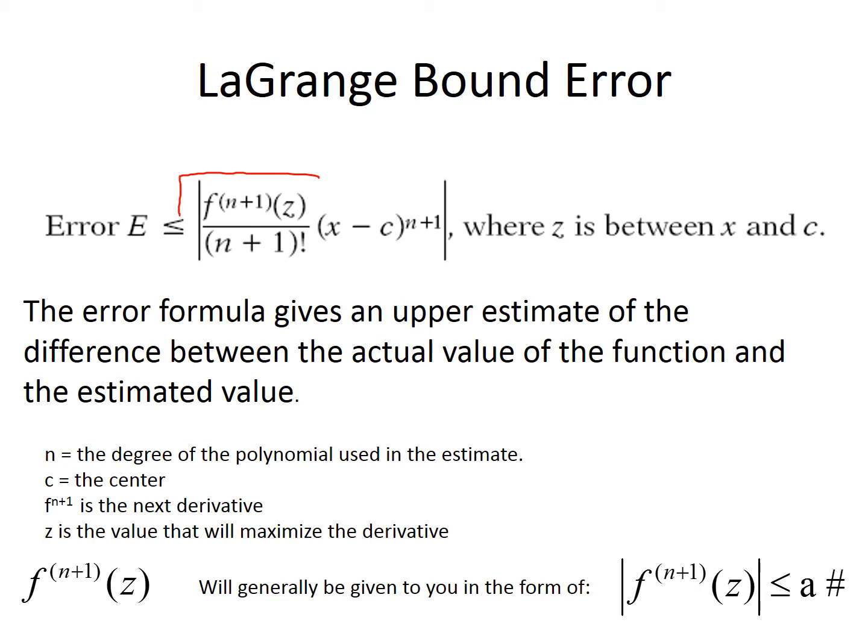Determining this value, specifically finding the z value. Okay, most of the time on the AP exam they're going to give you this value. They're going to tell you what the maximum derivative is. z is the value that maximizes the next derivative. So z is the value, whatever the derivative is on this interval, what would maximize it? That is z.